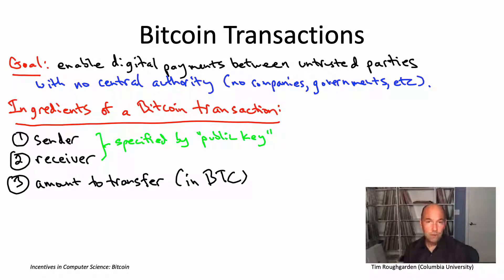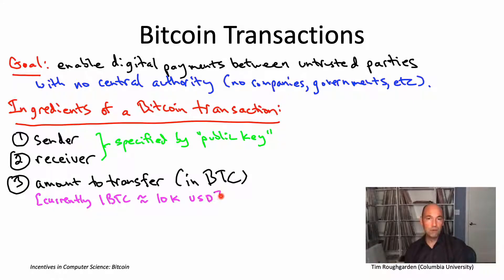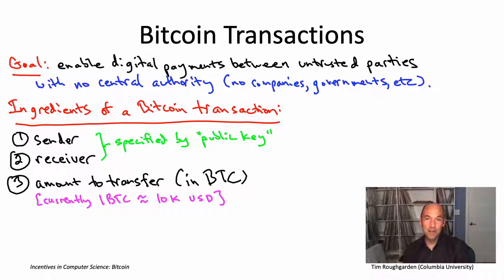There are exchanges out there where you can trade in your Bitcoins for US dollars or vice versa. So at any given time, if you look at the exchanges, there's a going price for what a Bitcoin costs. As you may have heard, that's been very volatile over the years — it's been all over the place. At the time of this recording in late July 2020, Bitcoin's been hovering around $10,000 per Bitcoin. I don't know when you're going to be watching this, but I wouldn't be surprised if that $10,000 had turned into $5,000 or if that $10,000 had turned into $20,000. Really have no idea how that's going to go.